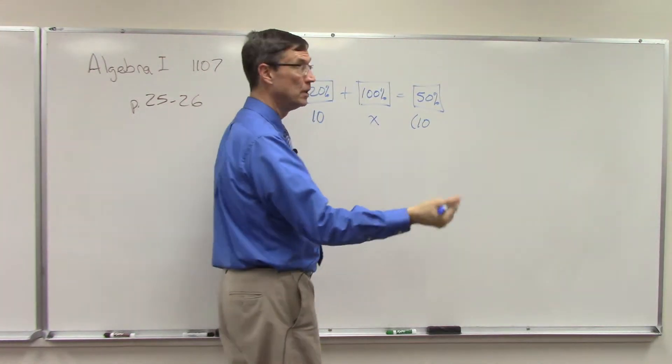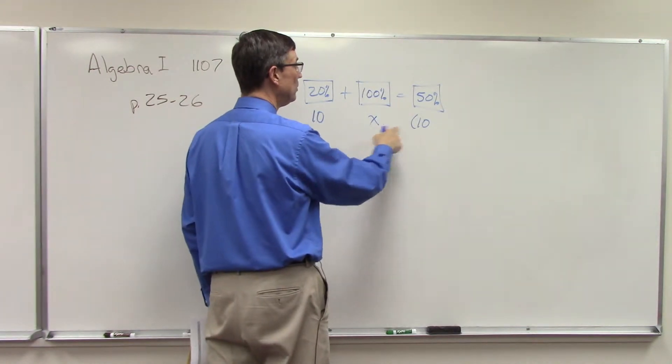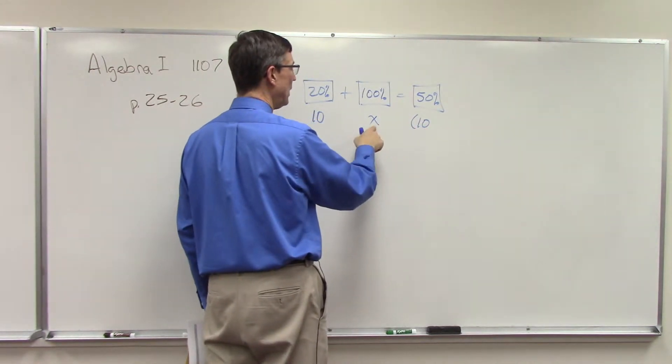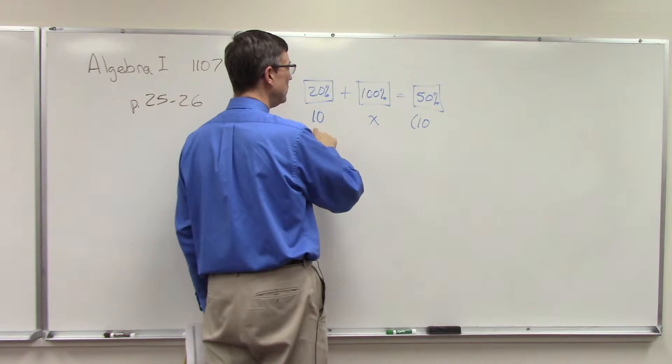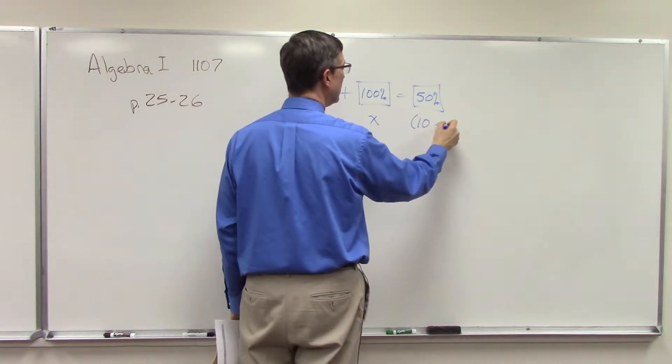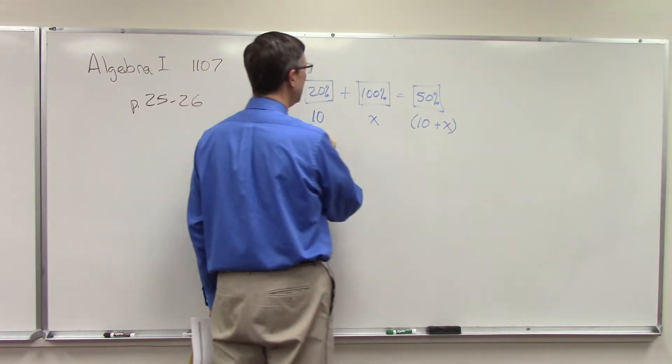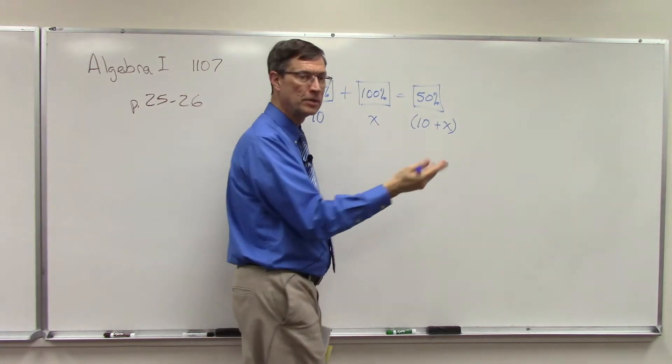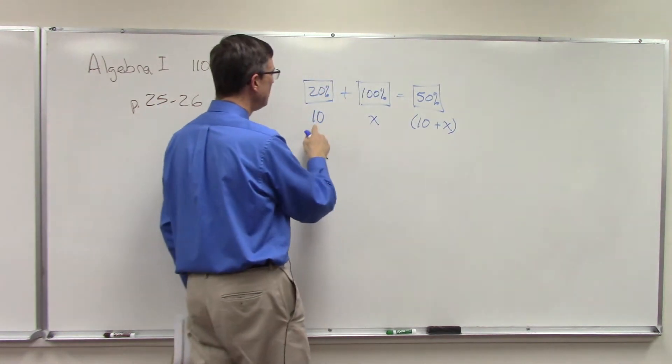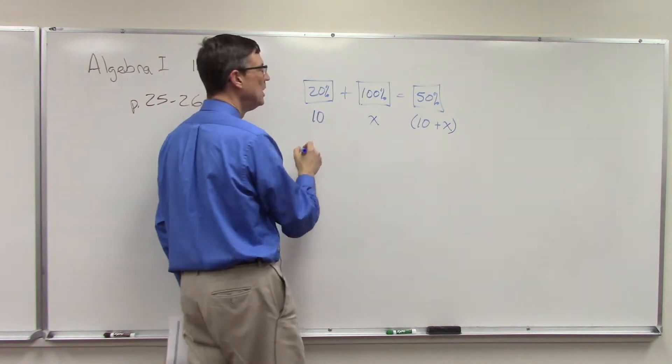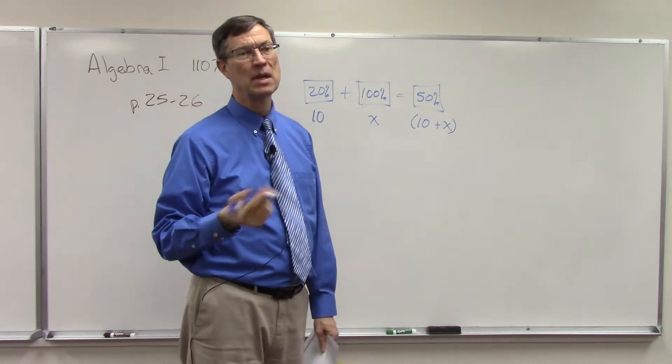If I add seven liters I'm going to end up with 17, because whatever I add here it's being added to the 10. So my final quantity has to be what I start with plus what I add. So this is the final quantity.